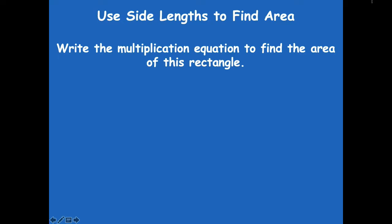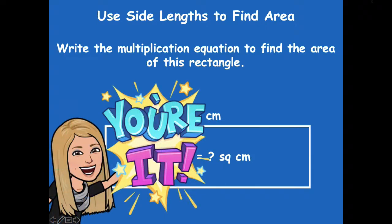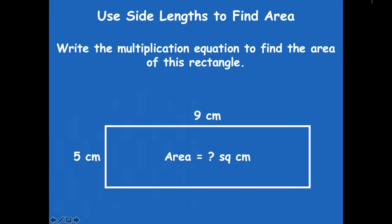Write the multiplication equation to find the area of this rectangle. Go ahead and pause the video, write your multiplication equation and solve, and then click play when you're ready to go over it together. I know that we're going to multiply the length and the width — the two side lengths. Five times nine equals 45 square centimeters.